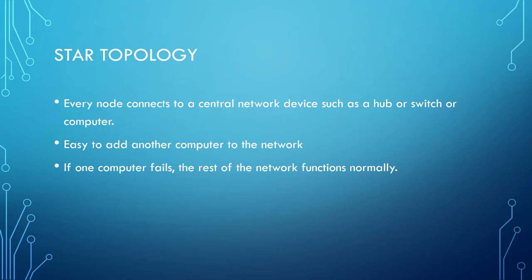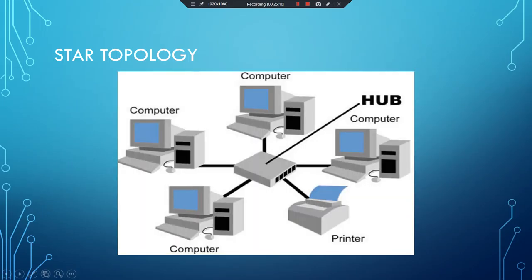Star topology: every network node connects to a central network device such as a hub, switch, or computer. It is easy to add another computer to the network, and if one computer fails, the rest of the network functions normally. An example diagram shows four computers and a printer connected directly to the hub, which could be replaced with a network switch.